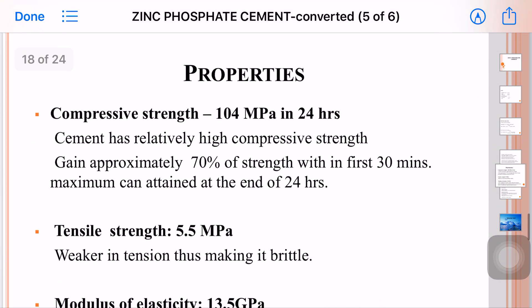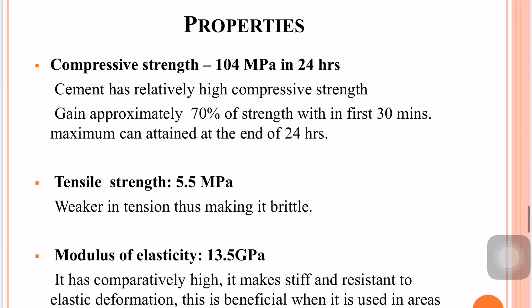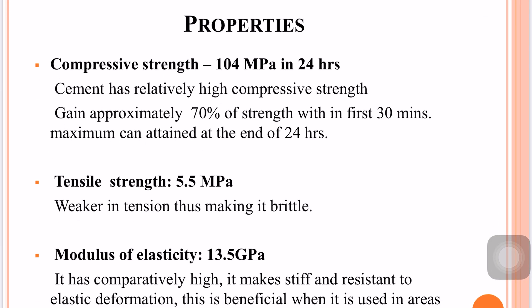Coming to properties: compressive strength is high, making zinc phosphate suitable as a base under amalgam restorations, as it must withstand high condensation forces. The cement has a compressive strength of about 104 MPa at 24 hours. Approximately 70% of this strength is gained within the first 30 minutes, with full strength attained after 24 hours.